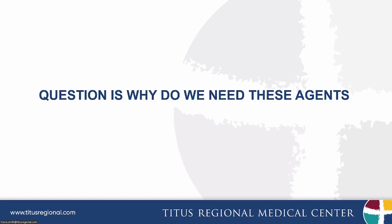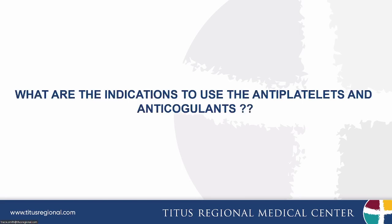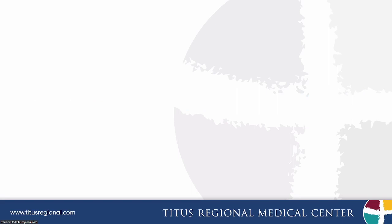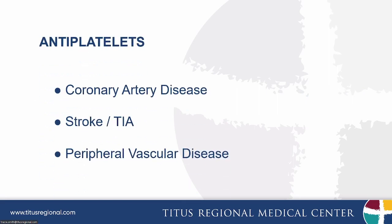Why do we need these agents? What are the indications? Some of the common ones for antiplatelets — not all, but the ones you routinely encounter: a lot of patients have coronary artery disease, strokes and transient ischemic attacks, peripheral vascular disease. These are the disease entities where you commonly see use of antiplatelet agents — may it be aspirin, Plavix, Brilinta, or prasugrel/Effient — the four common ones used interchangeably among these different entities.